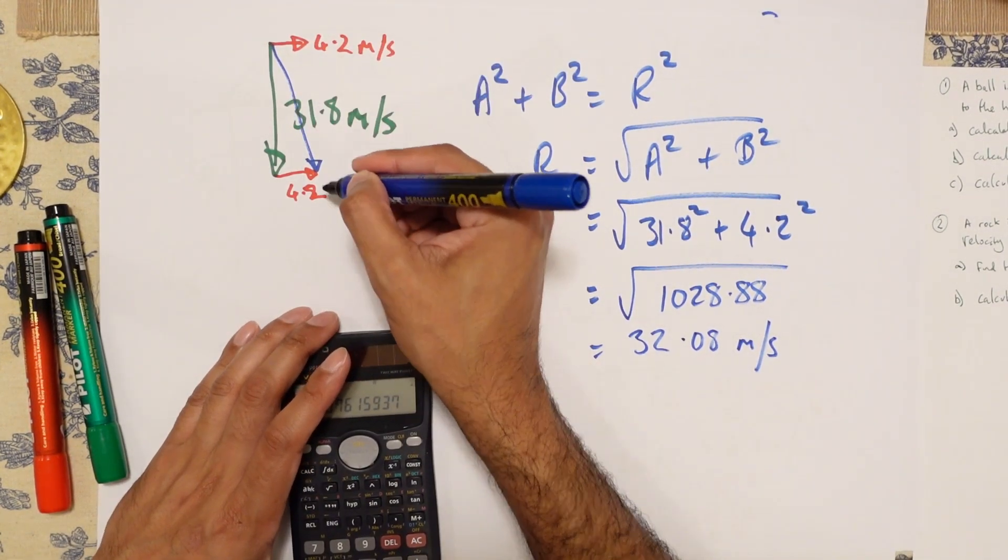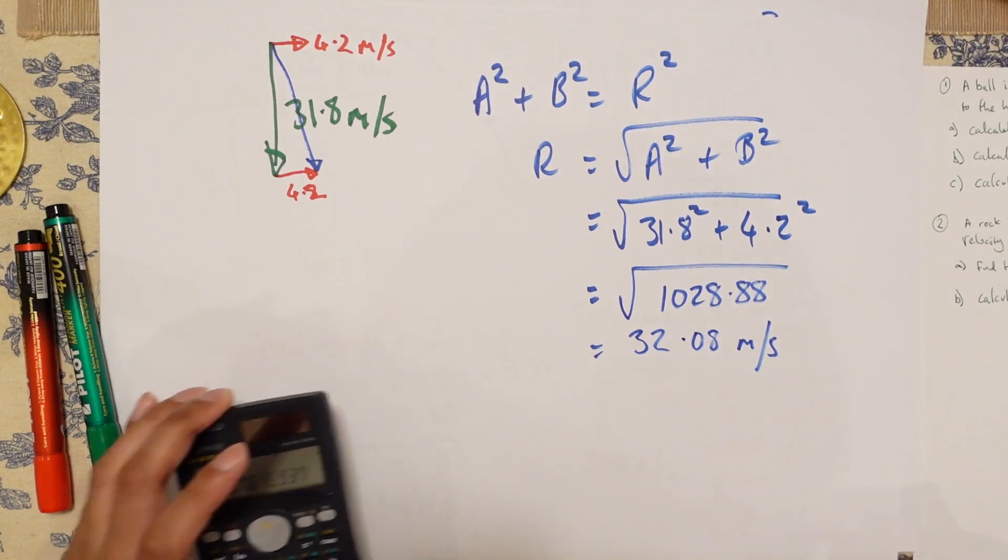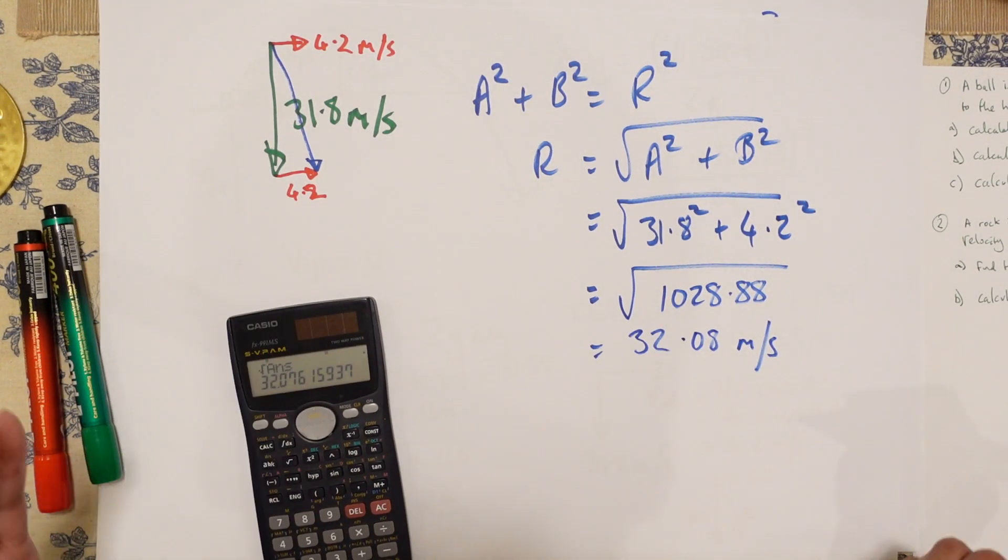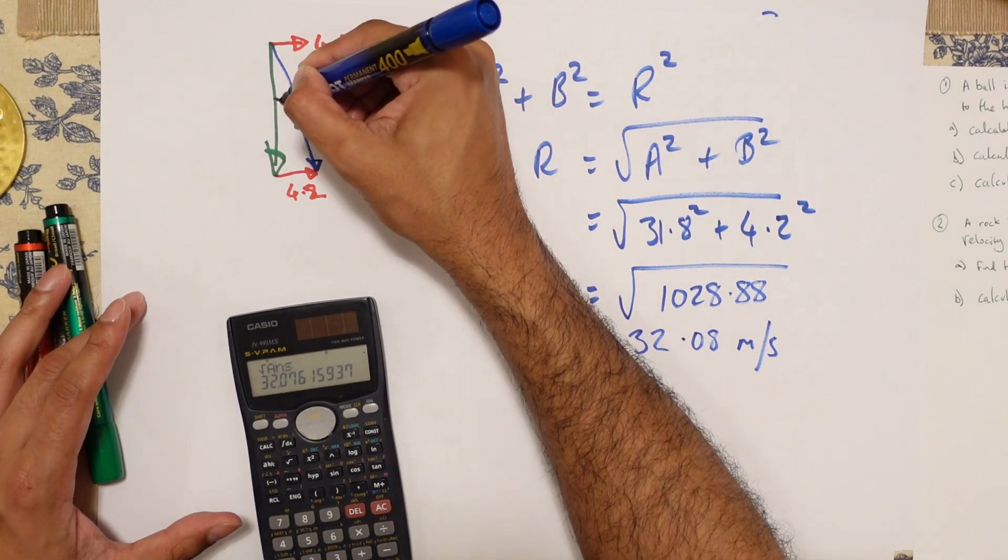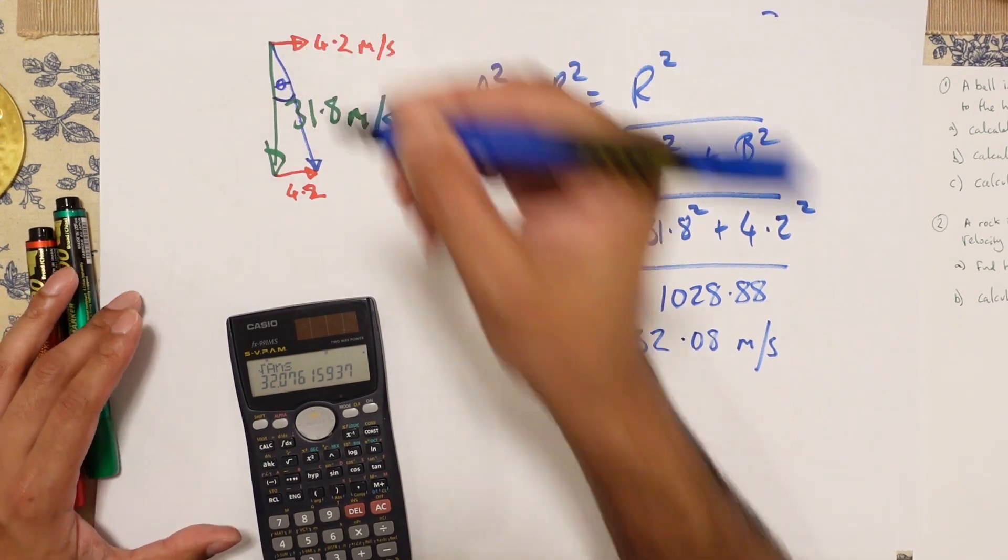So that's this line over here. This line is 32.08 meters per second. Now, because it's a velocity, it's a vector, and it needs a direction. So you actually have to work out this angle here.